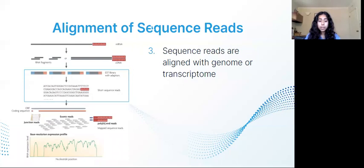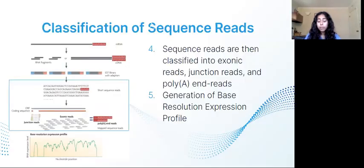Third, sequence reads are aligned with the reference genome or transcriptome. Fourth, sequence reads are identified into three types: exonic reads, junction reads, and poly-A end reads. A base resolution expression profile can then be generated using these three types of sequence reads. On the diagram, the abbreviation ORF stands for open reading frame.